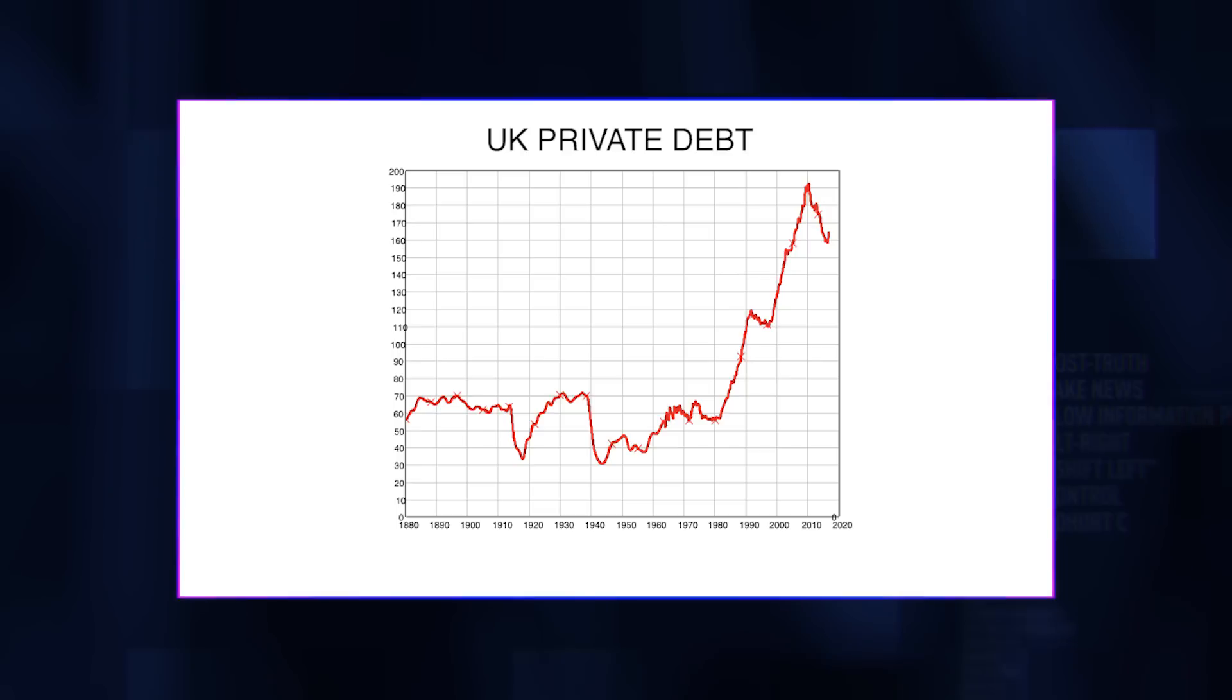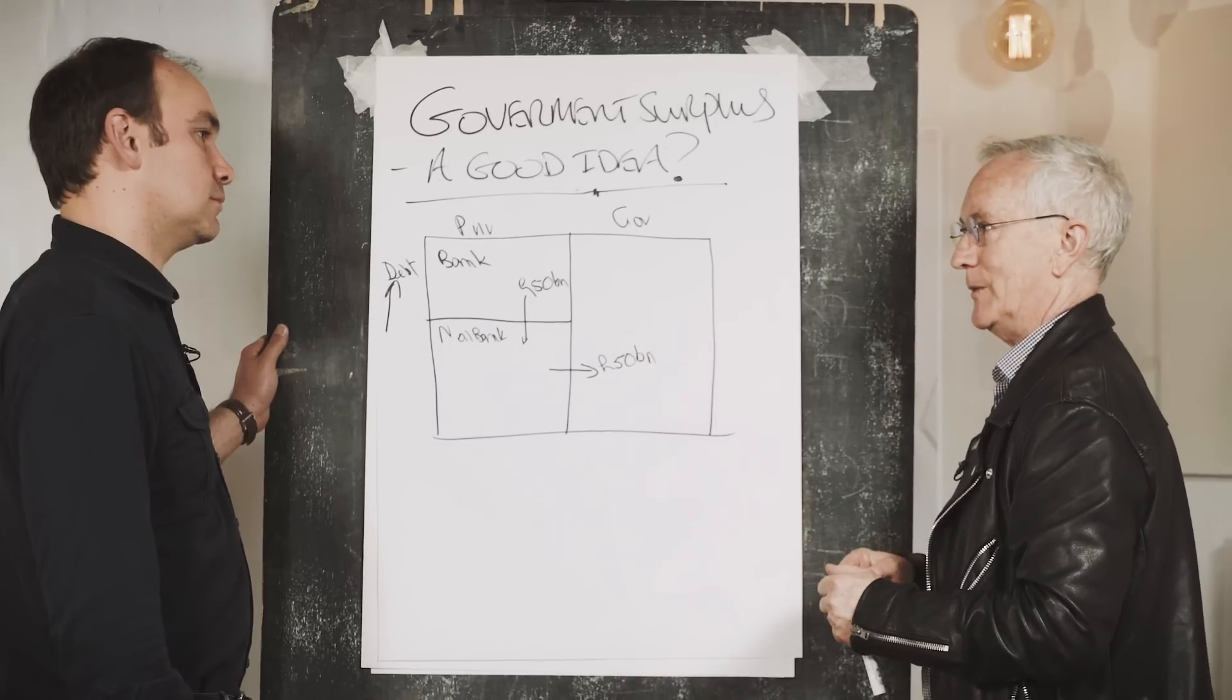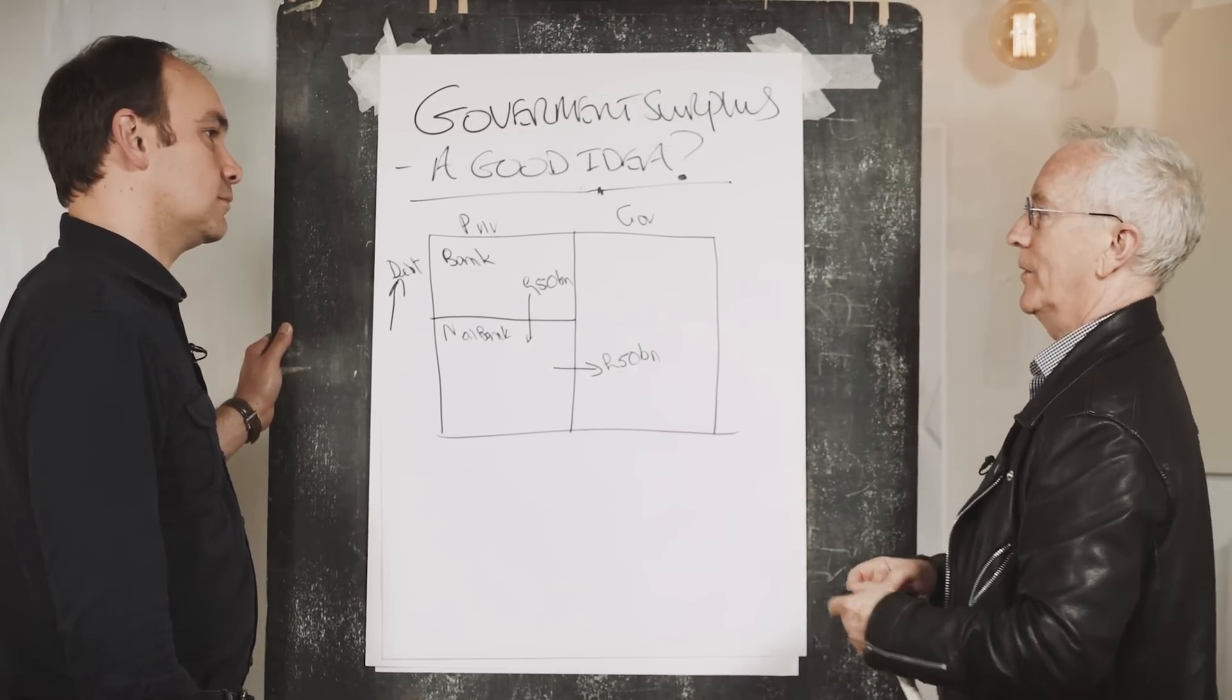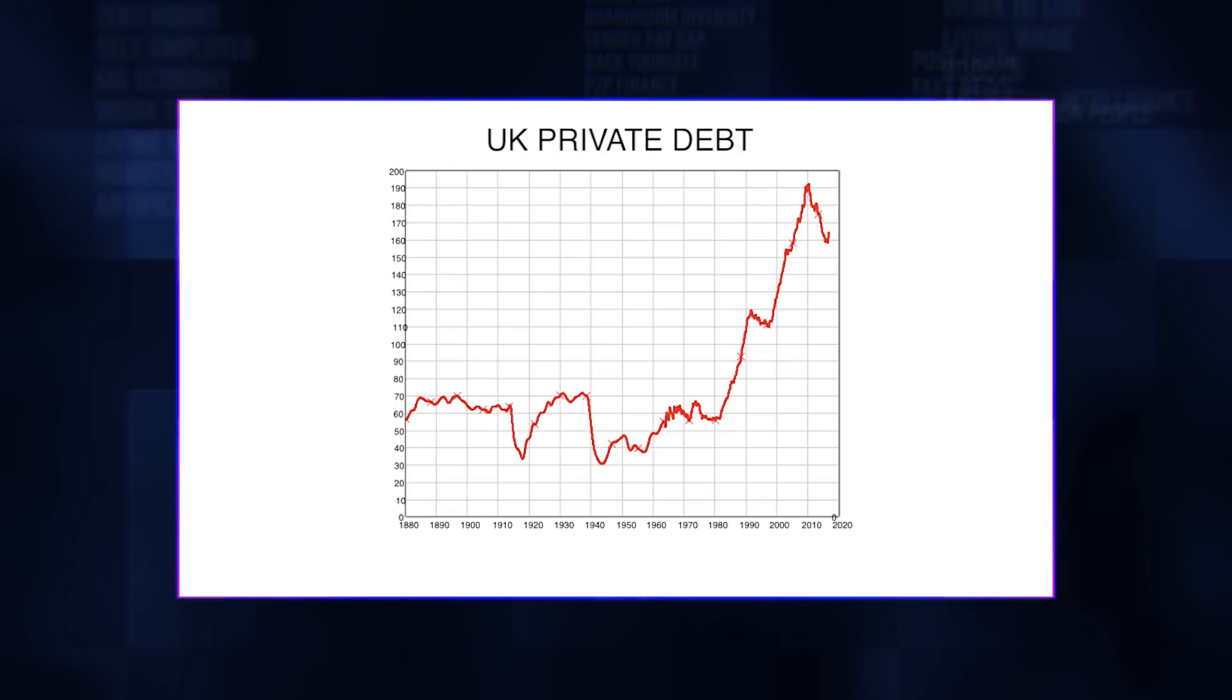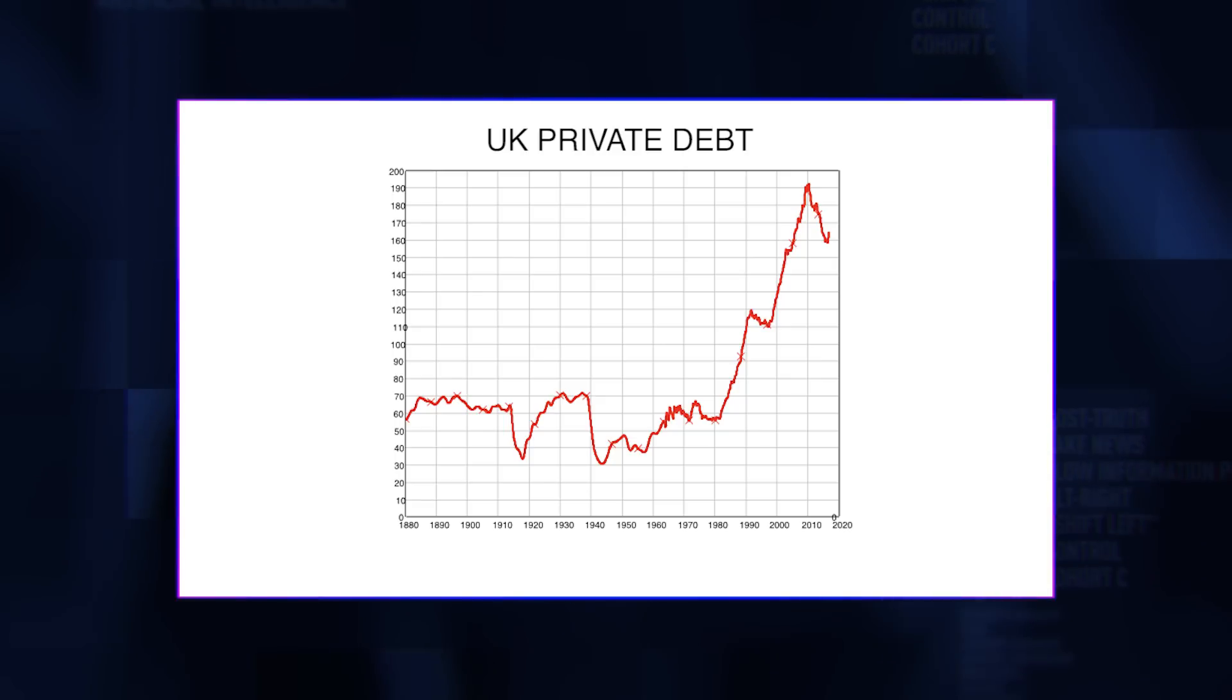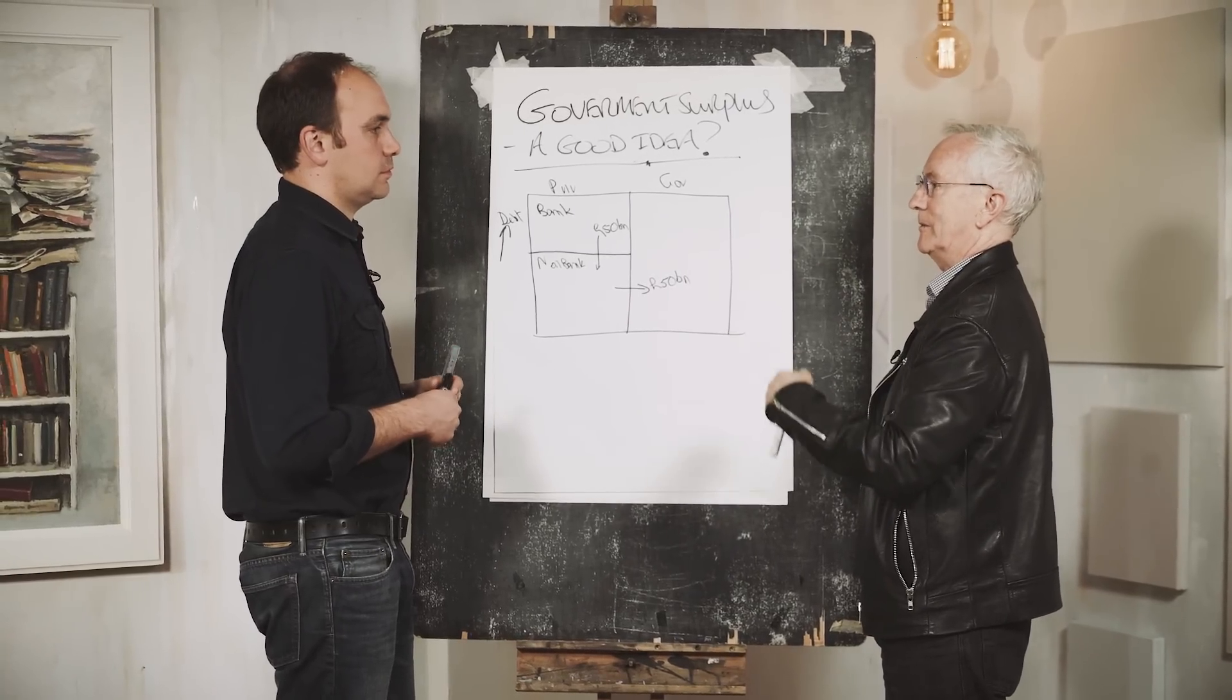Then in 1980, 79-80, we have a new Conservative government that believes that we should treat the economy like a household and tries to run surpluses and liberates the financial sector to let capitalism rip. What actually happened from that point is it wasn't capitalism that ripped, it was the financial sector. We went from a debt level of 55% of GDP to 195% back in 2010. And from that point on, nobody wants to borrow any money anymore, credit demand has evaporated and we're in almost permanent slump.